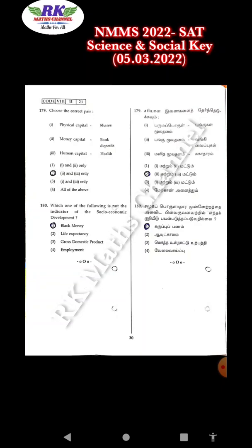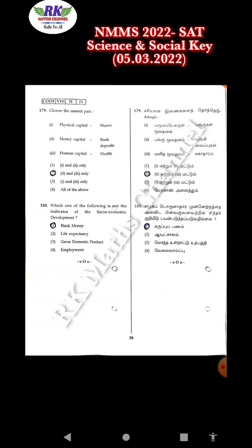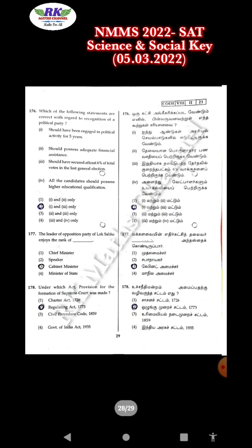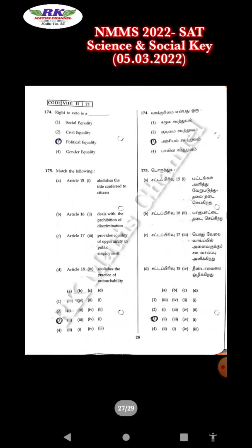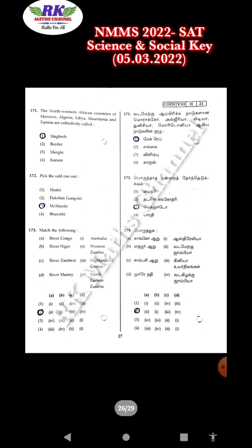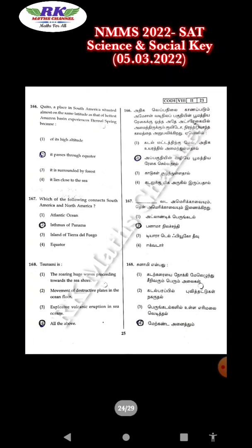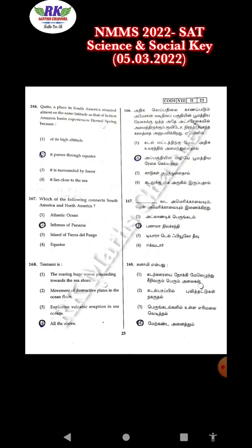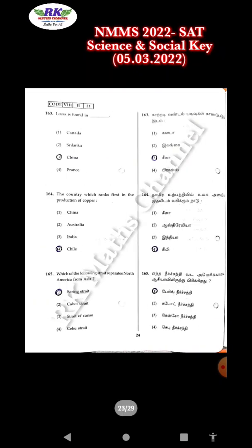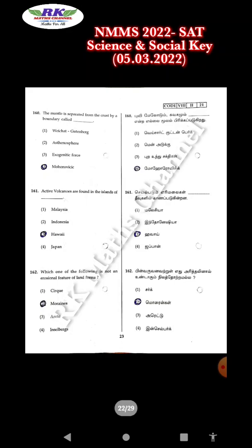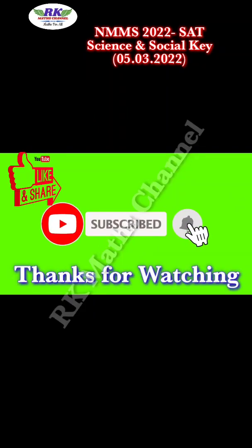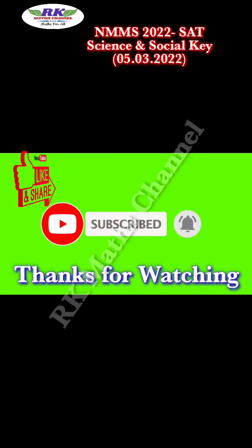180, option 1. Okay, so this is the NMMS 2022 SAT Science and Social key answer. If you want to check, mostly correct — you want to check. You want to share, like, comment, share, and subscribe. Thank you.